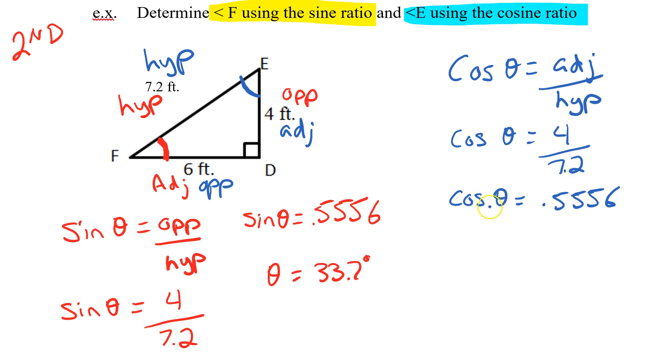I'm looking for my angle so I've got to get rid of the cos so that means second function time. 0.5556 second function cos my angle is going to be 56.3 degrees, again rounded to one decimal place.